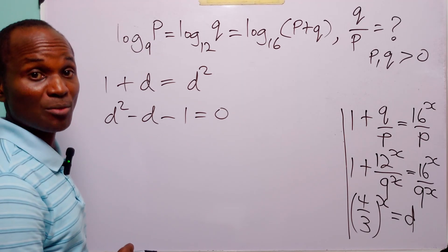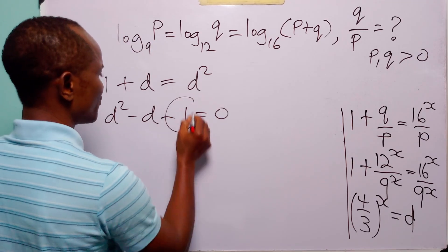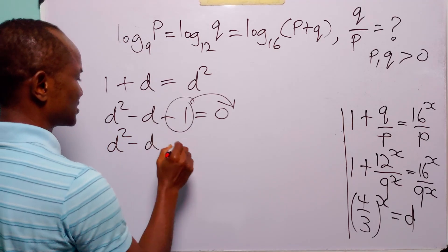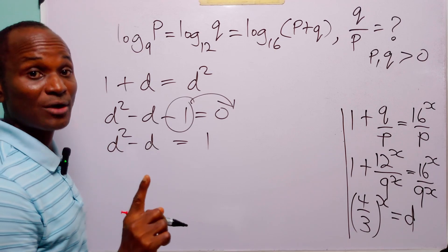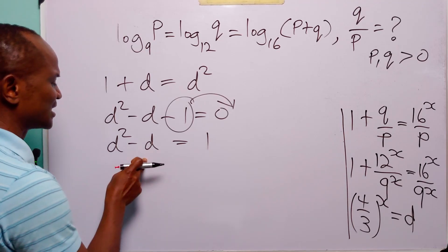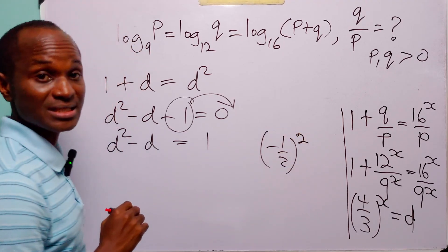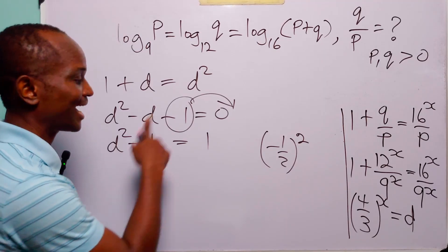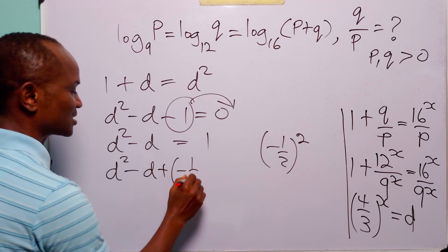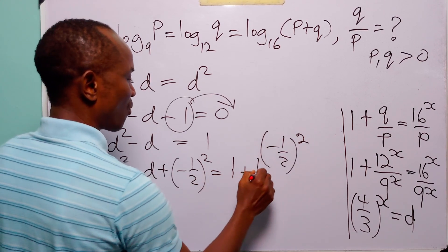We cannot factorize this equation, but we can solve by completing the square. Since the coefficient of D squared is already 1, we move the constant term to the right-hand side: D squared minus D equals 1. Next, we add the square of half the coefficient of D to both sides. The coefficient of D is minus 1, half of that is minus one-half, and its square is one-quarter. So we have D squared minus D plus one-quarter equals 1 plus one-quarter, which is five-quarters.